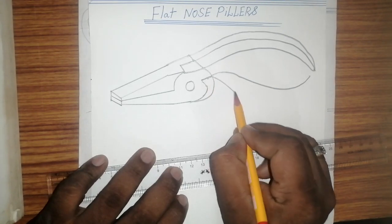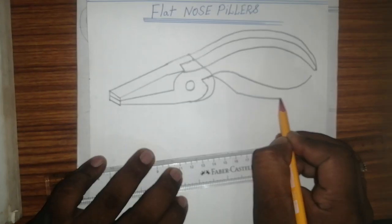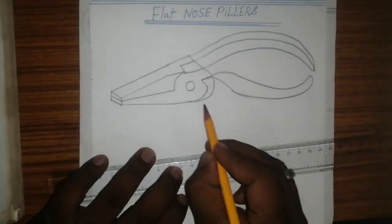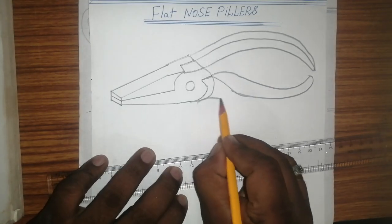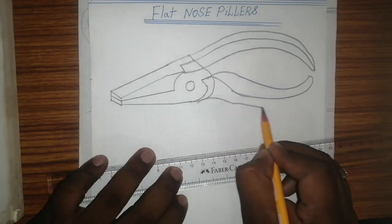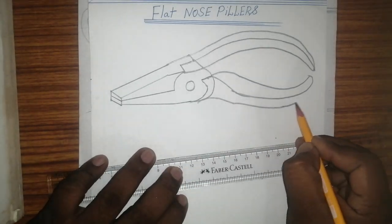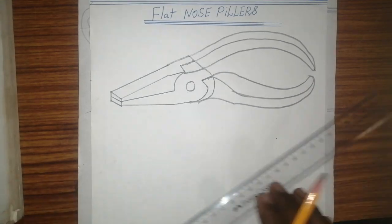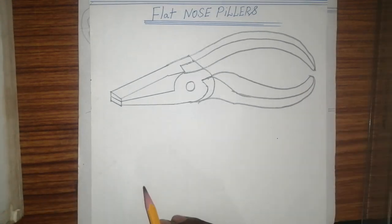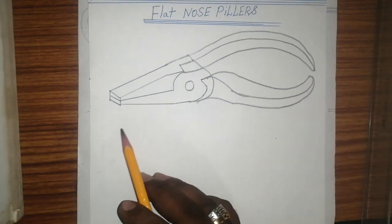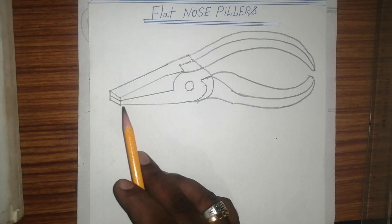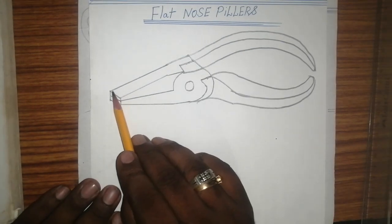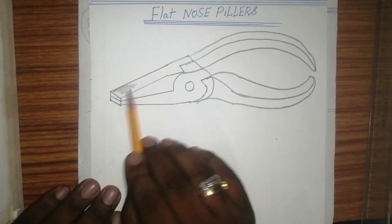Take this curve line — this is a flat nose plier. Just simply do shading and it's done.